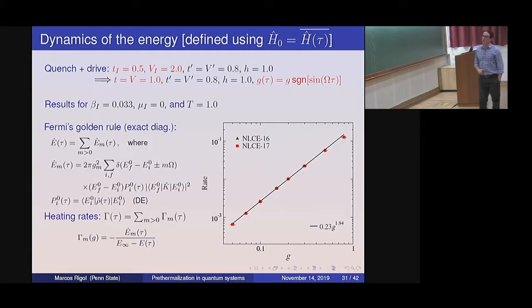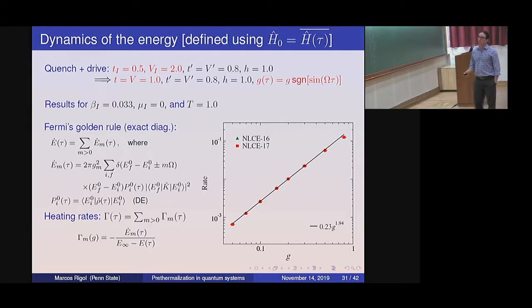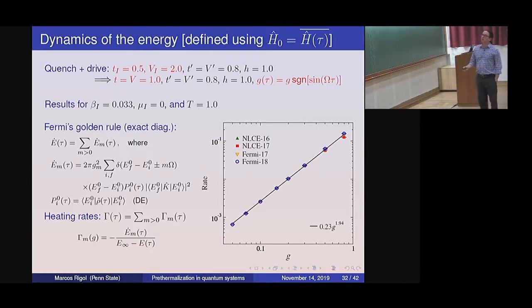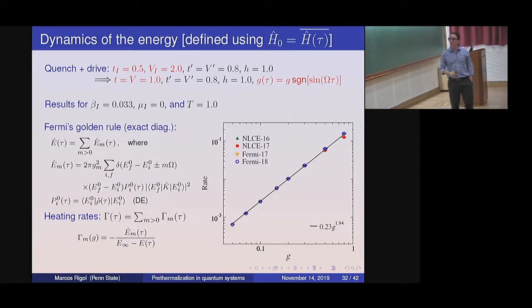Going back to Fermi-Golden rule, we add contributions from all Fourier modes. The procedure is exactly the same as before, just summing over modes, and you calculate those rates. They match exactly what you got numerically in the numerical experiment. This expression gives you precisely the rate.